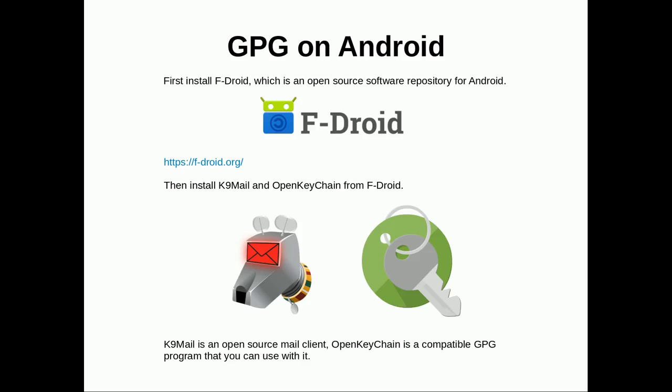GPG on Android: it's possible to get GPG messaging on Android, though it's likely not as secure a platform as Linux. You'd probably want an open source phone. If you are going to do GPG on Android, first install F-Droid, which is an open source software library for Android with lots of copyleft GPL programs. You would then install from F-Droid: K-9 Mail and OpenKeychain. OpenKeychain is similar to Enigmail and K-9 Mail is like Thunderbird but mobile. The steps would be exactly the same as in this tutorial.